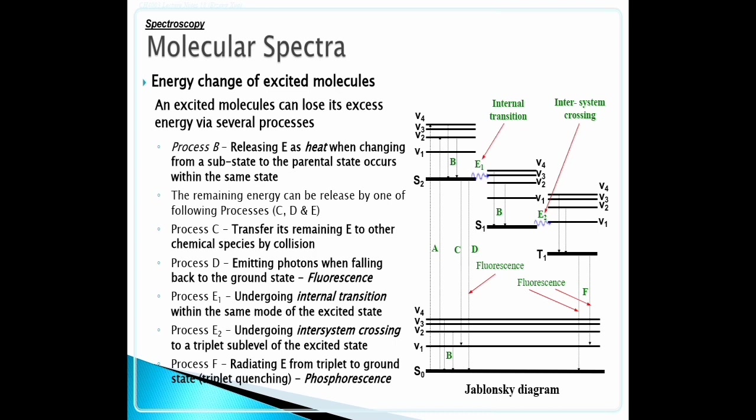Process C: Transfer its energy E to other chemical species by collision. Process D: Emitting photons when falling back to the ground state, fluorescence.